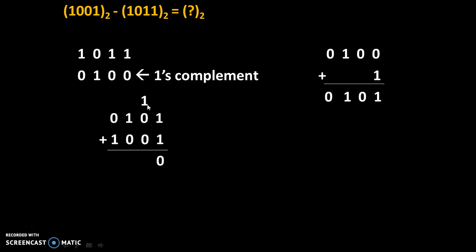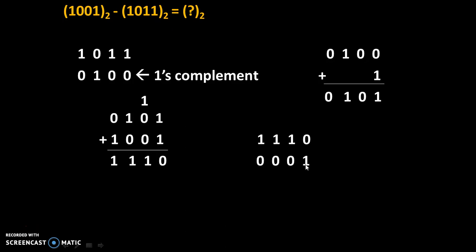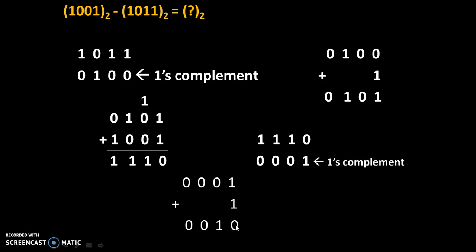Adding: 1 plus 1 is 0 with carry 1; the next digits carry through as 1, 1, and 1. Here in this addition carry is not generated, so rule 4 is applicable. We take the 2's complement of this answer. The 1's complement is found by replacing each 1 by 0 and 0 by 1, then we add 1 into it. So 1 plus 1 is 0 with carry 1, and the rest of the digits are 0. This is our answer, and this answer is negative.